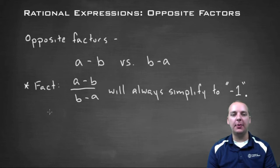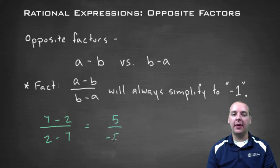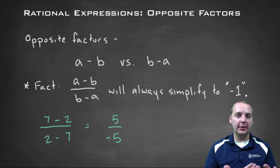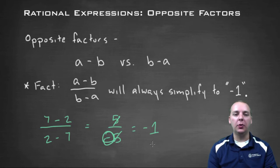It's pretty clear why this happens. If you tried a number example it would make it clear. If you had seven minus two divided by two minus seven, well seven minus two is five, and two minus seven is negative five. So whenever you subtract the two you're always going to get the same number, except one will be positive and the other will be negative. So they'll always cancel, but you'll always still have this negative that's left over, which means you'd have a negative one.